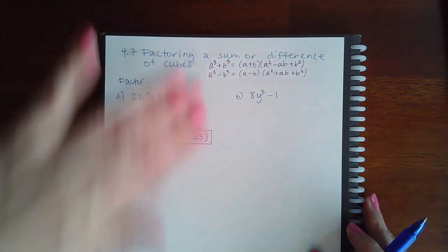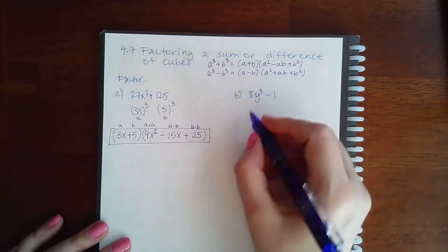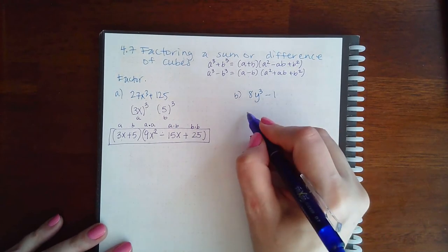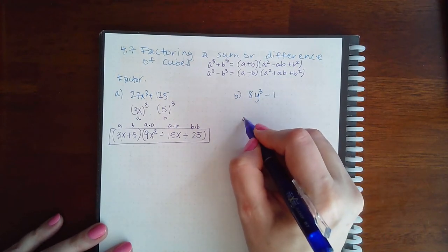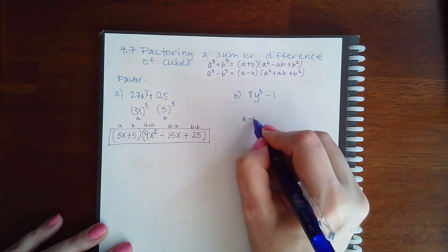So I typically don't memorize these all too much. What I remember is this formula. Once I figure this out, it's going to be a, because that's a minus, a minus, and a b.